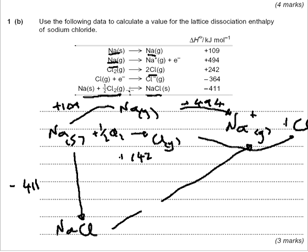And then the chlorine going to the chloride ion, so it's gaining, it's an electron affinity. So that one is here, the minus 364.